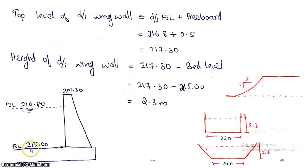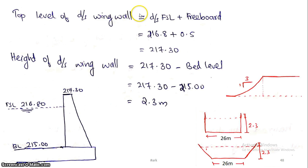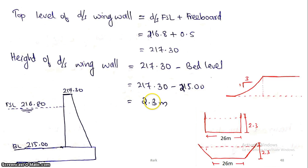In the sectional view of the downstream wing wall: the downstream bed level is 215, full supply depth is 1.8 meters, so FSL is 216.8. Adding 0.5 meter freeboard gives a top level of 217.3 meters. The height is 217.3 minus bed level 215, which equals 2.3 meters total height.